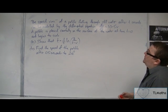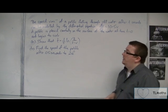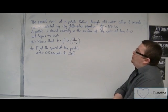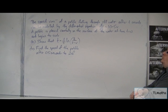A pebble is placed carefully on the surface of the water at time t equals 0 and begins to sink. Show that t equals one-fifth log of 2 over 2 minus v.